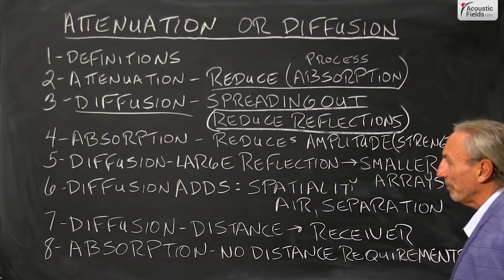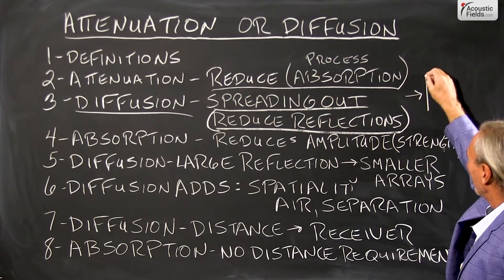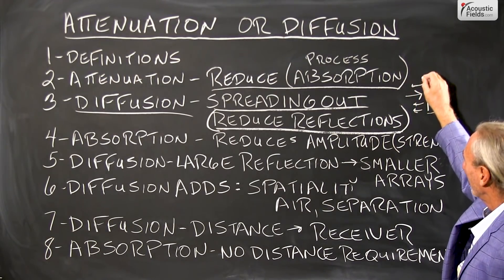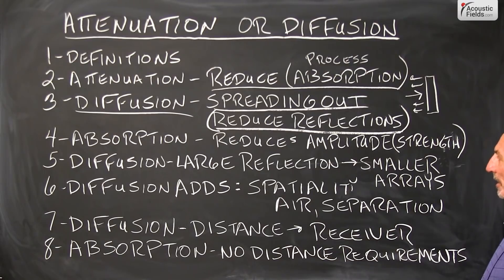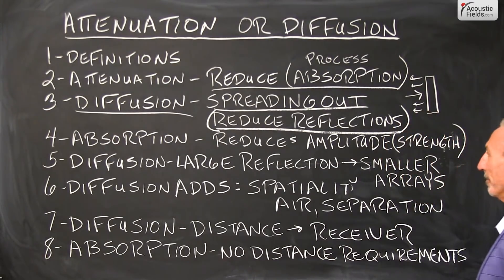So with reflections, we have a big reflection coming in and when it comes into a diffuser, it goes out in little or smaller reflections and that helps us cycle acoustically and we'll talk about that in another video.